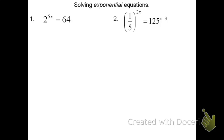To do the first problem, we're going to try to make 64 using a base of 2. This may take some trial and error and you may need your calculator. I know that 2 to the 6th power is 64. So I'm going to write 2 to the 5x equals, and then rewrite the 64 as 2 to the 6th power.